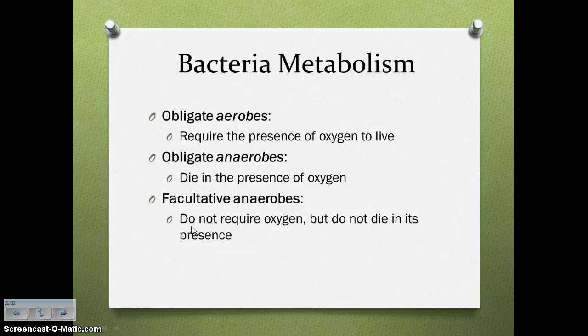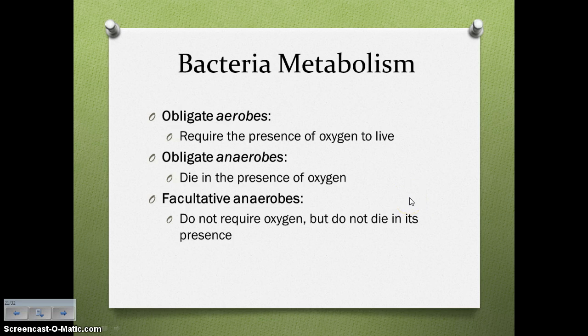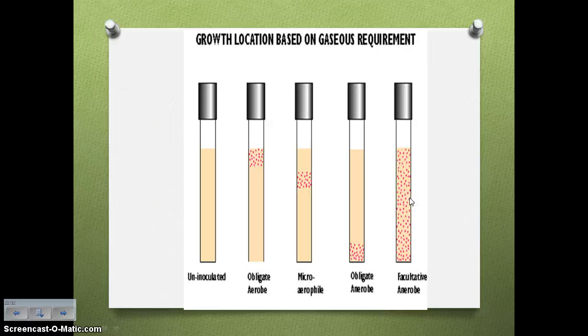A couple of words you need to know about how bacteria metabolize. Obligate aerobes require the presence of oxygen. Obligate anaerobes die in the presence of oxygen. Facultative anaerobes don't require oxygen to live, but they don't die in its presence. You can tell what's what by where they grow in a bacterial solution — at the top for obligate aerobes, at the bottom for obligate anaerobes, and spread out evenly for facultative anaerobes.